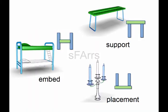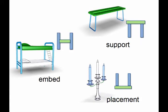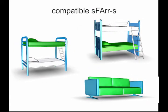We define three types of symmetry functional arrangements: embed, support, and placement. These arrangements are compatible only if they are of the same type.